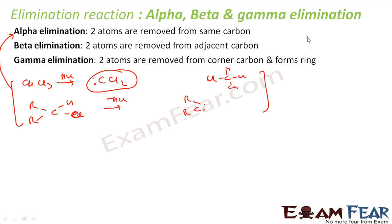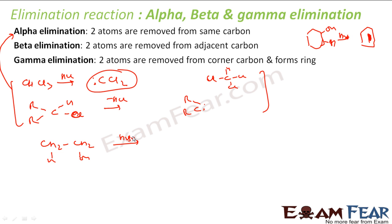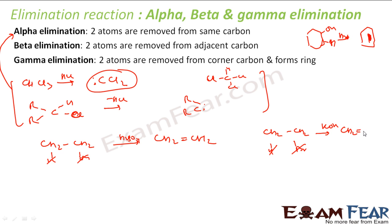In beta elimination, atoms are removed from adjacent carbons. For example, I have an alcohol with OH here. With H2SO4, this OH and a neighboring H are removed to form a double bond. Another example: CH2-CH2 with H and OH — with H2SO4 at 170°C, one H is removed from one carbon and one OH from the adjacent carbon, giving the alkene. Similarly, with CH2-CH2-CH2 having H and Br, using KOH removes H from one carbon and Br from the adjacent carbon to give CH2=CH-CH2.